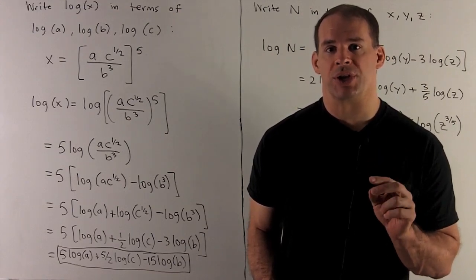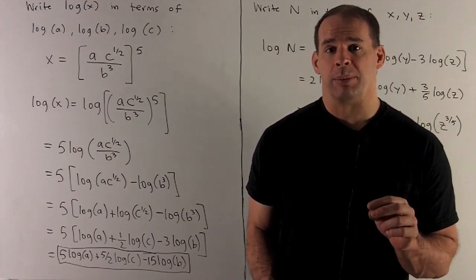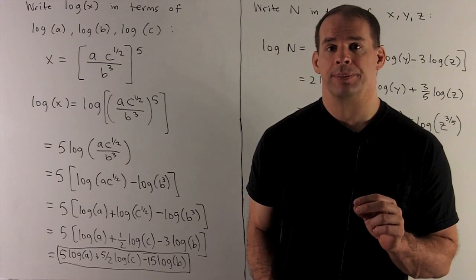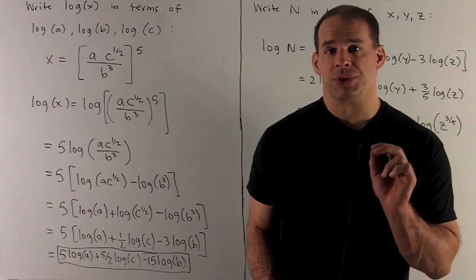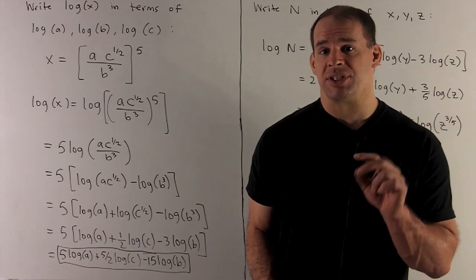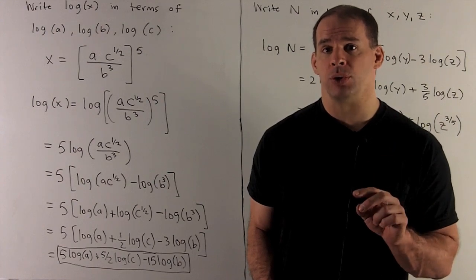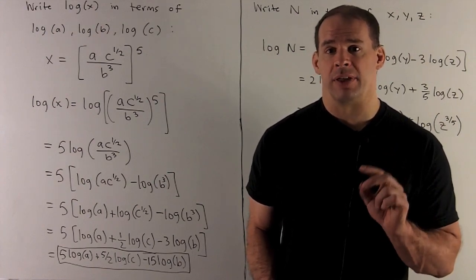Write log of X in terms of log A, log B, and log C. X is going to be equal to A times C to the 1 half divided by B cubed, quantity raised to the fifth power.